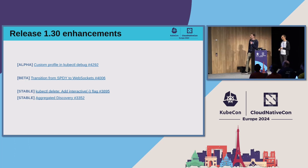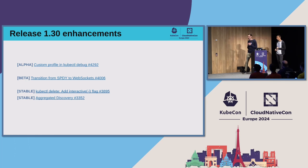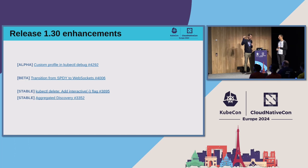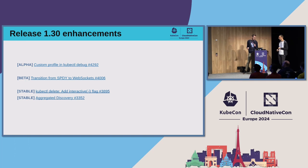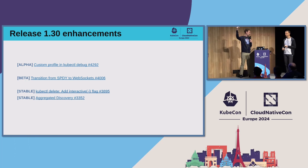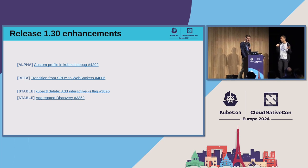Another big project is transitioning from SPDY to WebSockets. SPDY is what HTTP/2 was called before HTTP/2 was a real thing — it's super old and deprecated. It's used everywhere for streaming and long-lived connections inside Kubernetes. Shout out to Sean Sullivan for cutting that over to WebSockets. That lands in beta. Two big stable features: kubectl delete now has interactive delete, and we are finally moving aggregated discovery to stable, which means your discovery time should go down significantly.